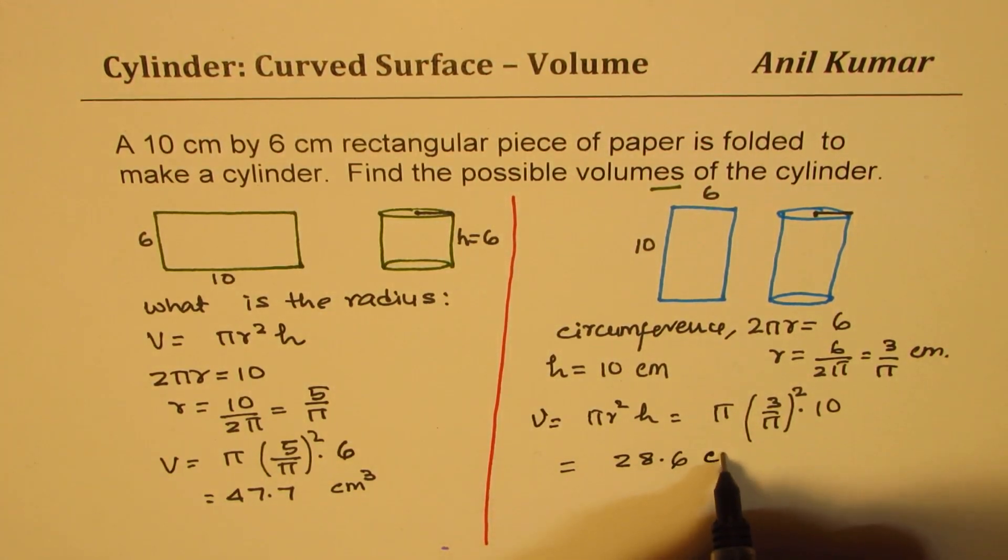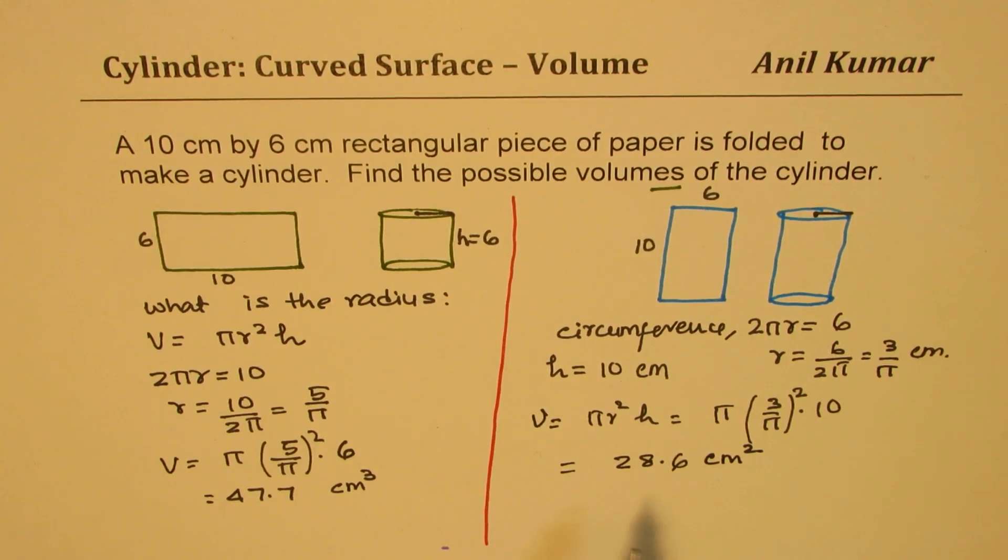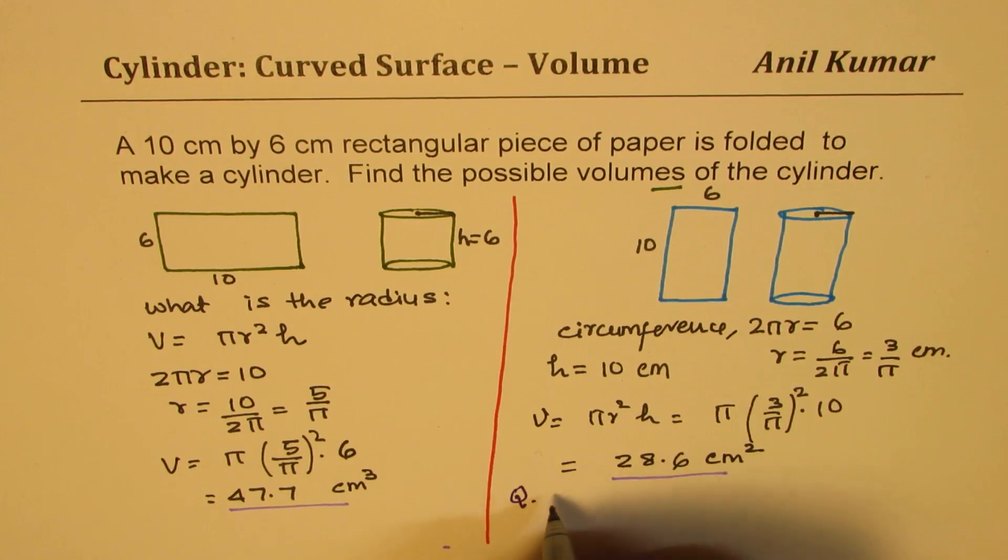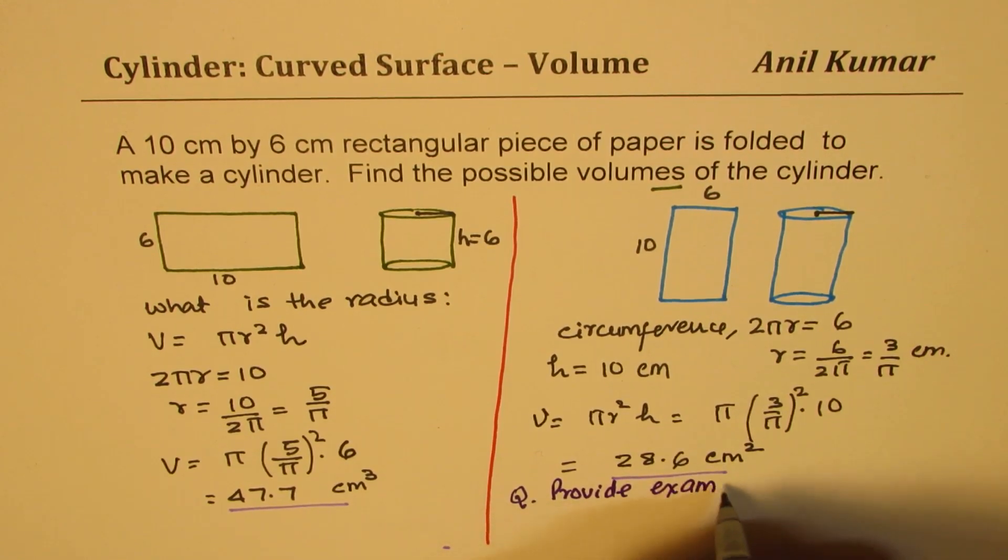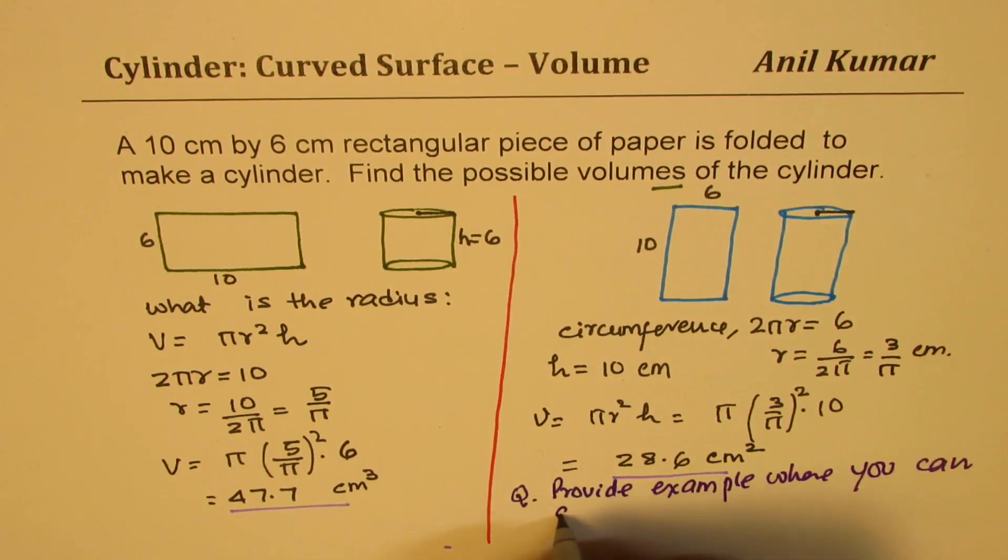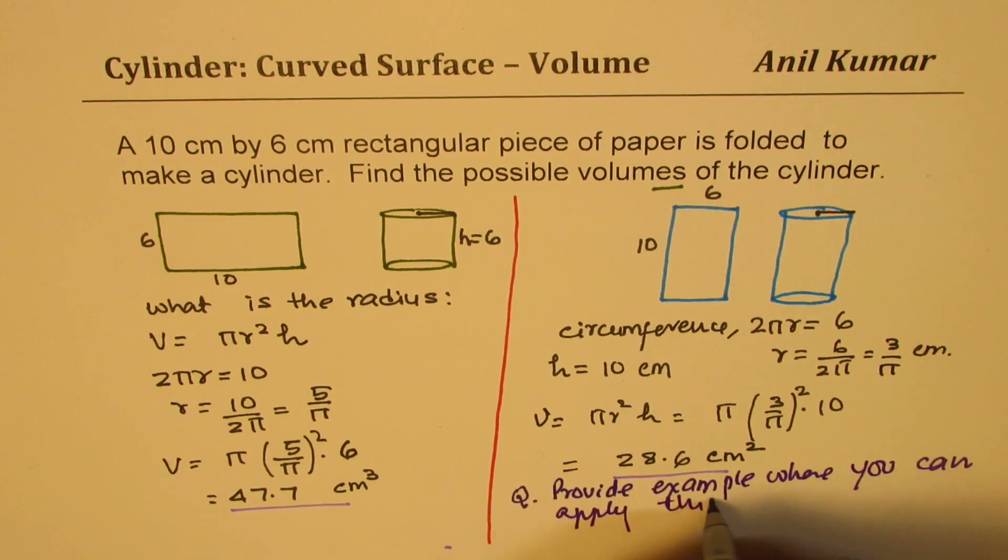So you notice that in both the cases, there is huge difference in the volume of what you make. There's a lot of difference. It is the same amount of paper, and the way you fold it and make a cylinder, the capacity is different. So the question now here for you is: provide example where you can apply this knowledge.